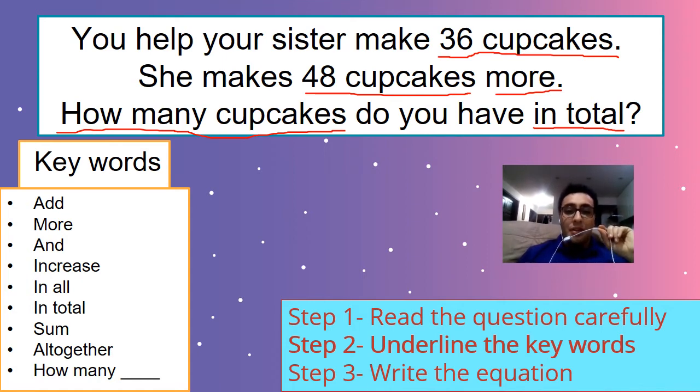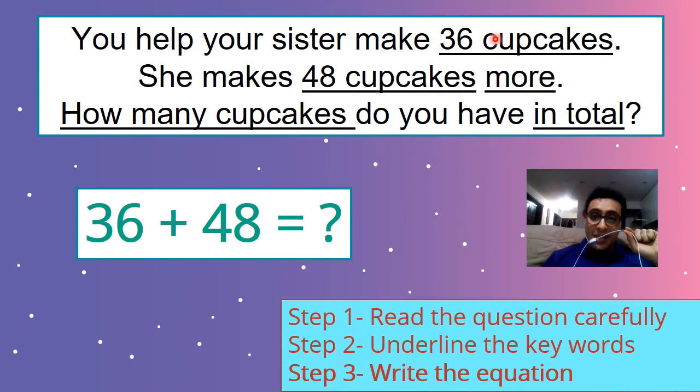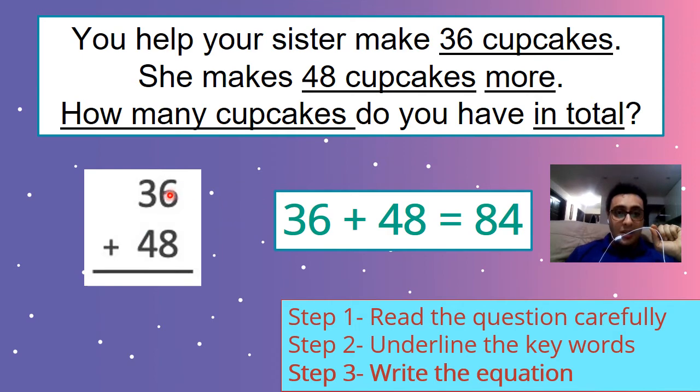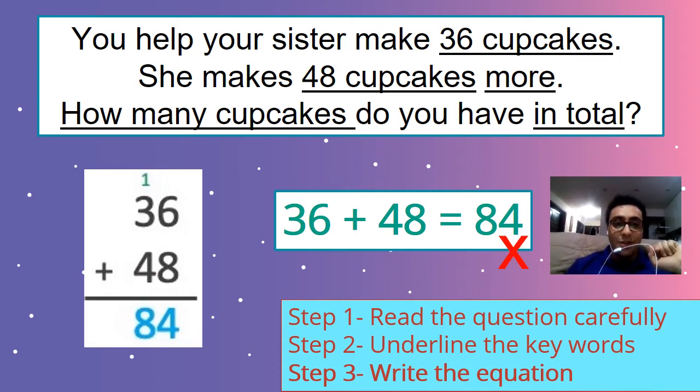Let's go to step 3. Write the equation. What is the equation? Remember? 2 plus 2 equals 4. That is equation. So let's go. Oh, guys. We are correct with underlining. See? Yeah. Good job. Now we write the equation. 36 cupcakes plus 48 cupcakes equals how many cupcakes? 36. Hmm. Let's do column form. 36 plus 48. Let's add the ones together. 6 plus 8 equals 14. Yes.